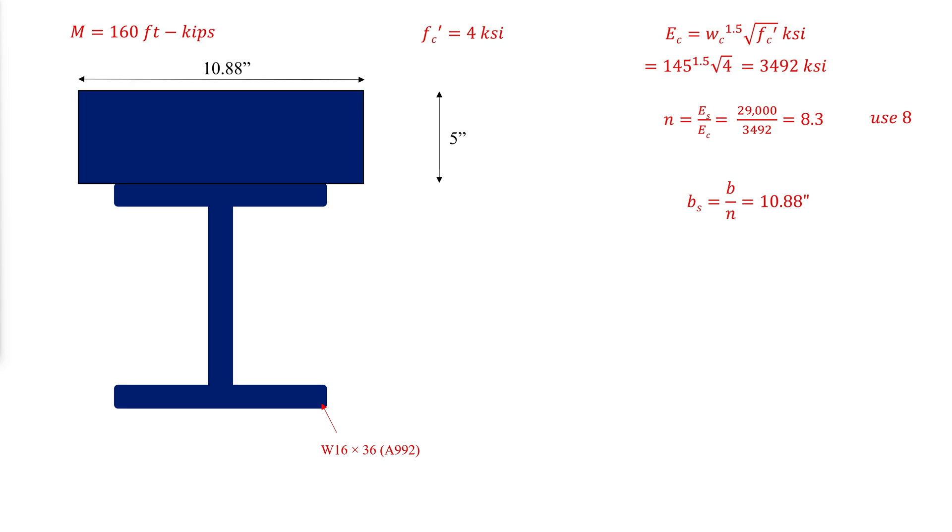Where Yt is the distance to the top of the steel from the neutral axis, Yb is the distance to the bottom of the steel from the neutral axis, Ybar is the distance to the top of the concrete from the neutral axis.